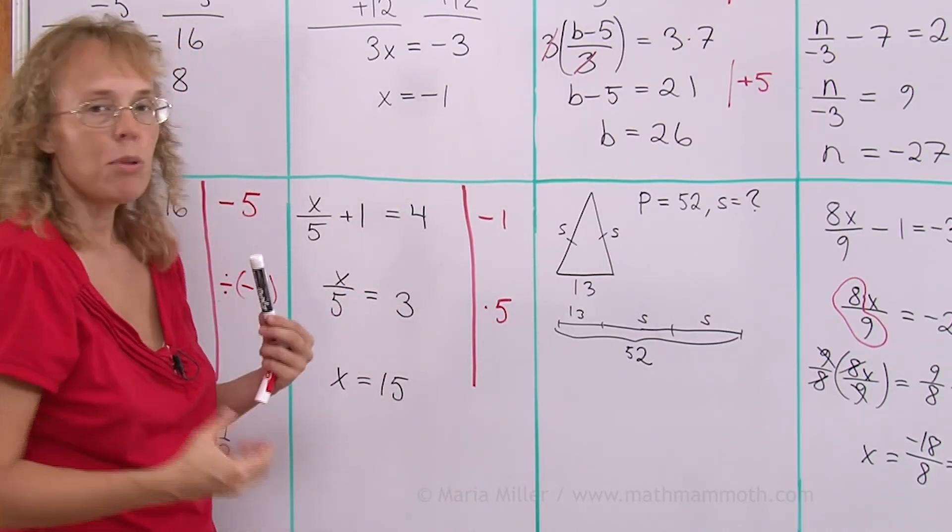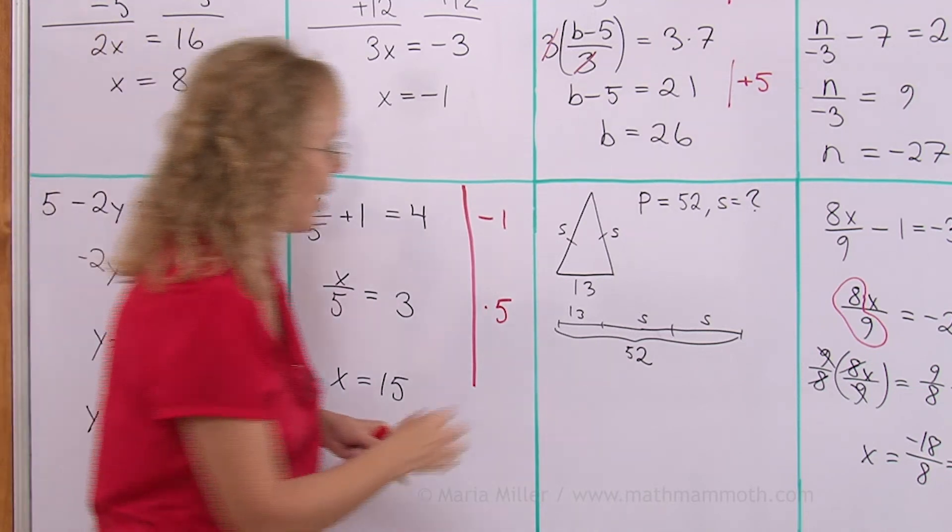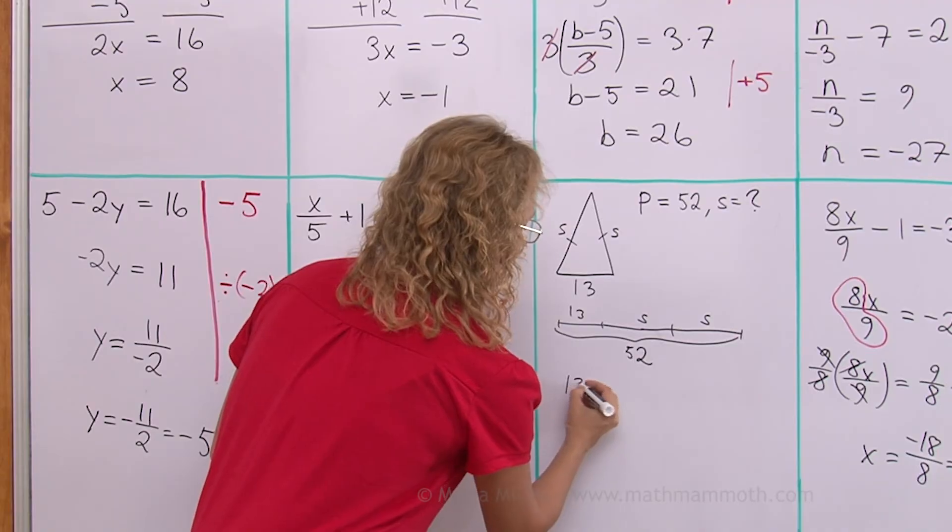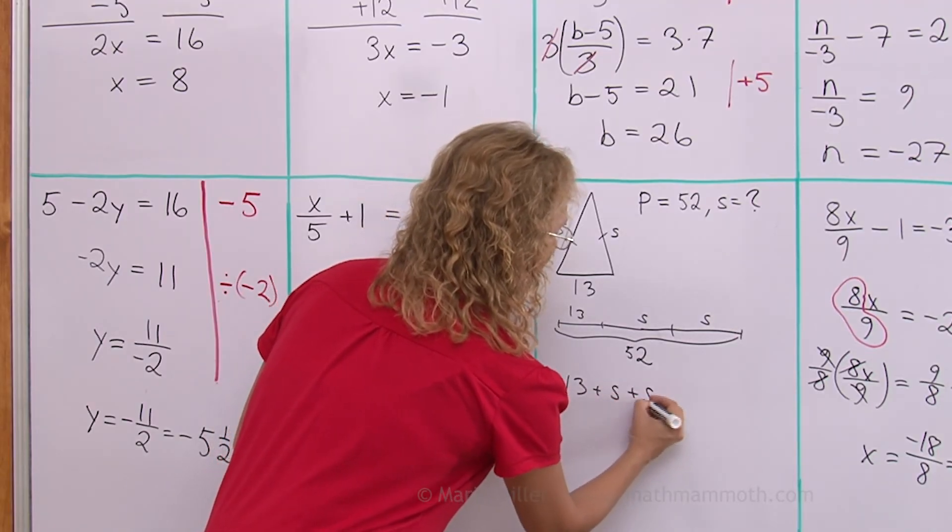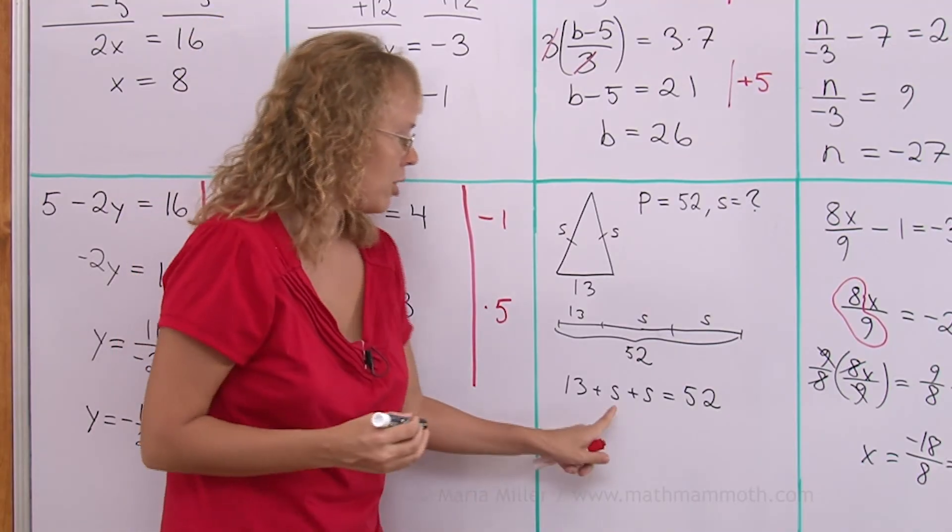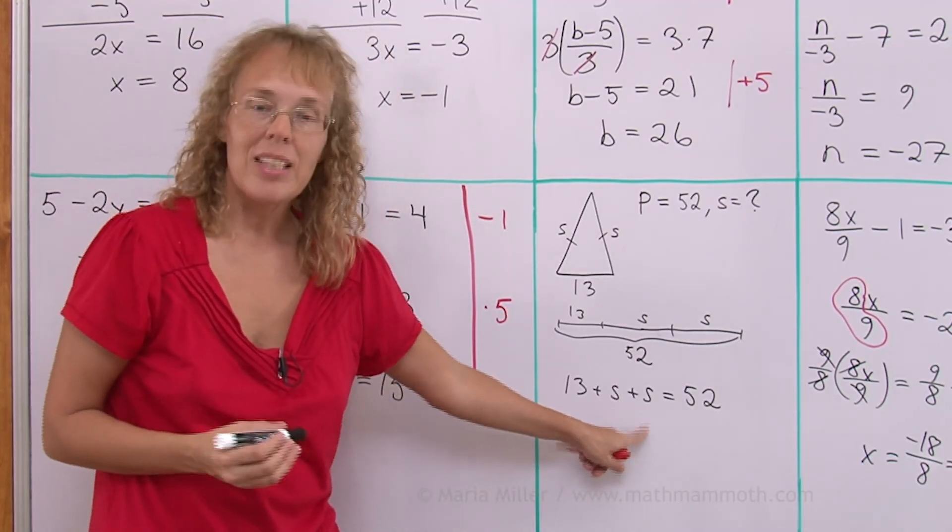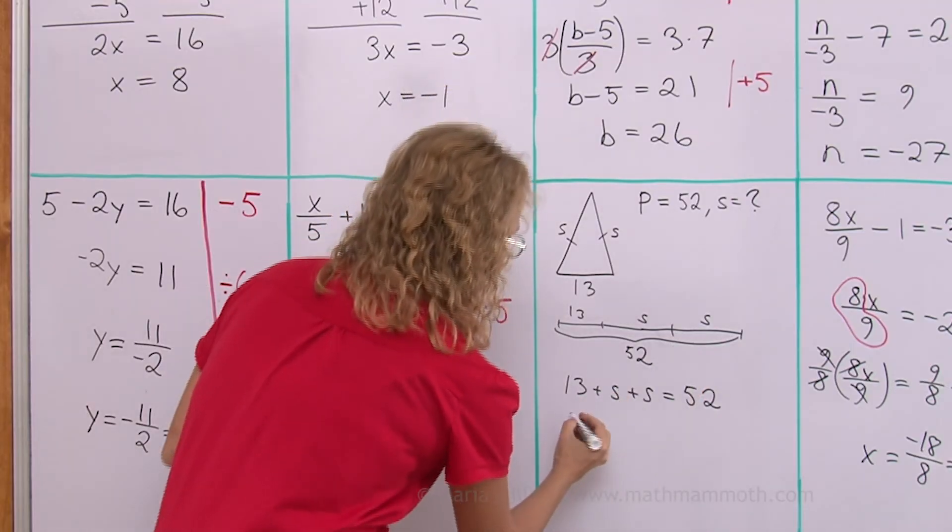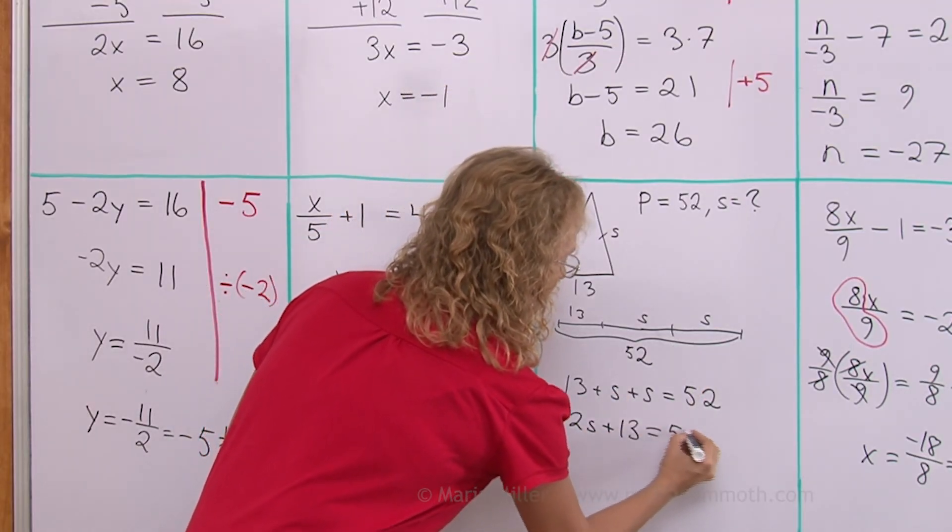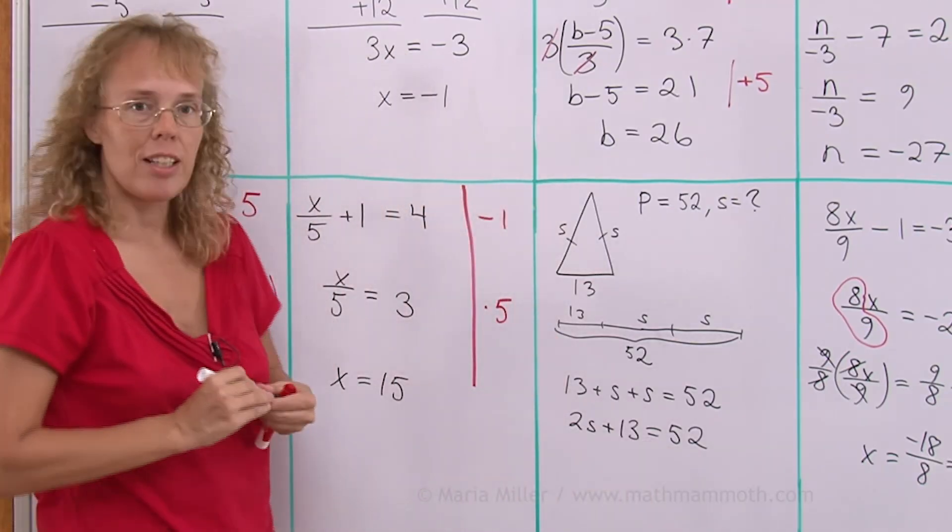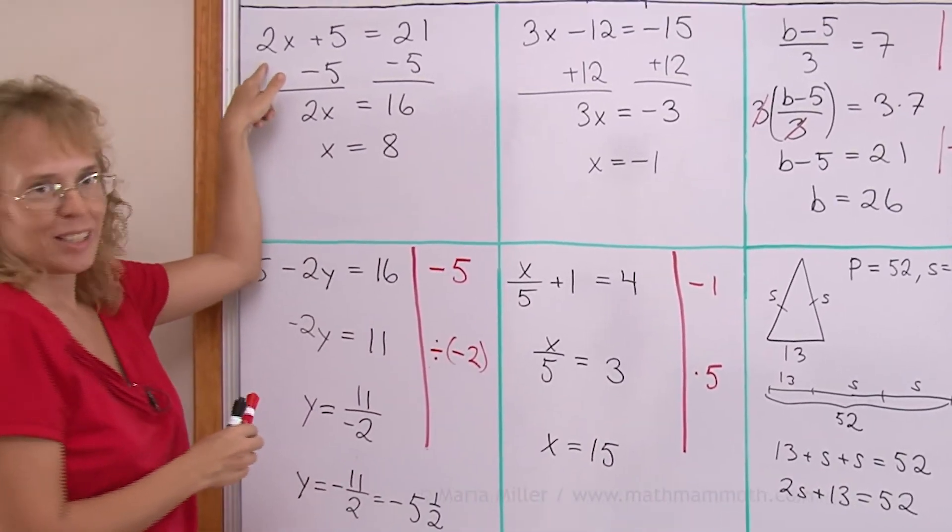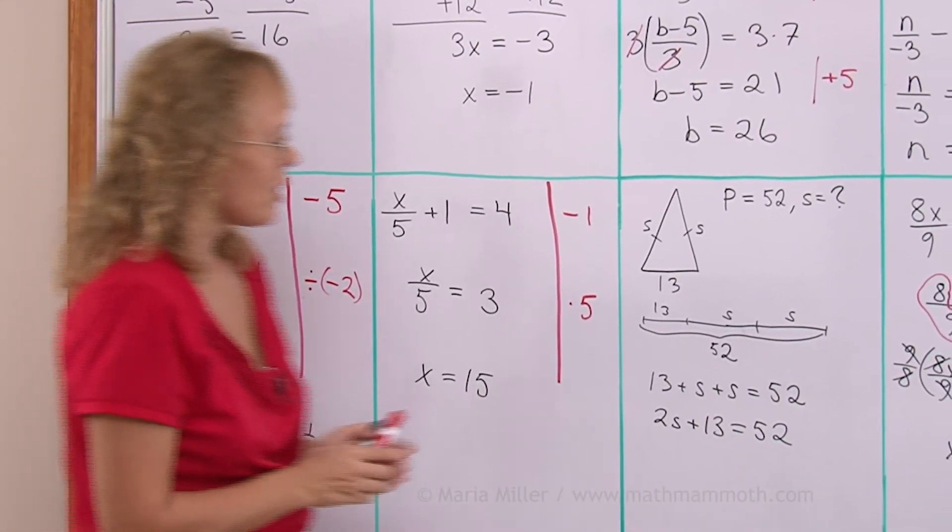Either way, now we will write an equation. We will add these together and it is 52. So there's 13 plus S plus S equals 52. Of course, S plus S is 2s, right? And let me write that first. 2s plus 13 equals 52. That's the final equation that I'm going to start solving now. It is exactly like this one here. Similar type.